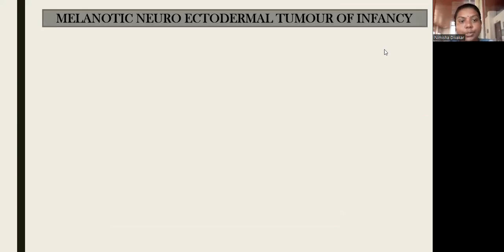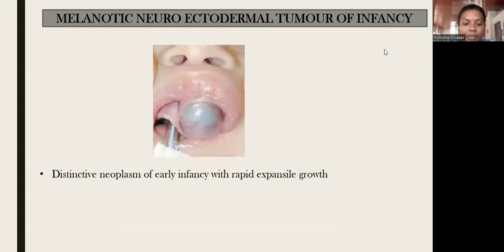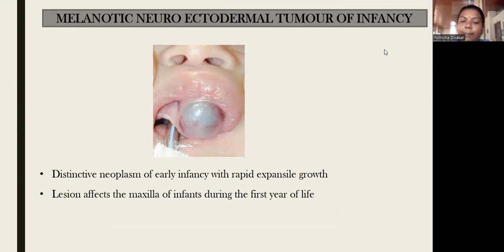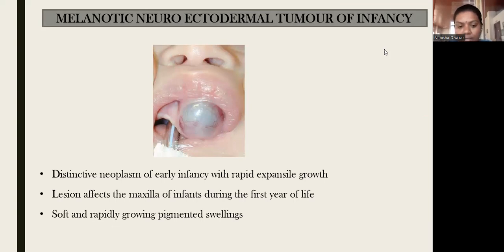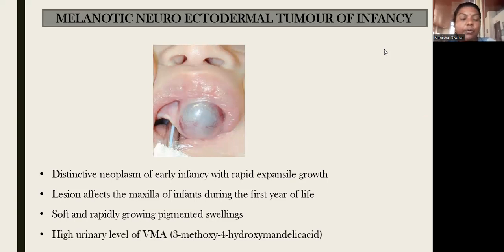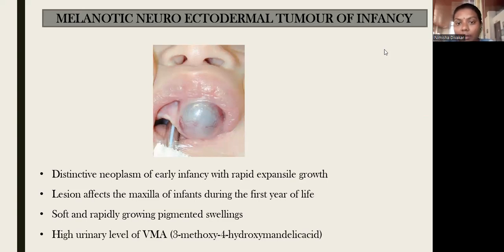Next localized tumor is melanotic neuroectodermal tumor of infancy. As the name suggests, it is commonly seen in infancy. It is a distinctive neoplasm of early infancy with rapid, expansive growth. The lesion affects the maxilla of infants during the first year of life as a soft, rapidly growing pigmented swelling. The pathognomonic feature for its diagnosis is a high urinary level of VMA — vanillylmandelic acid — which is the characteristic diagnostic feature of melanotic neuroectodermal tumor of infancy.